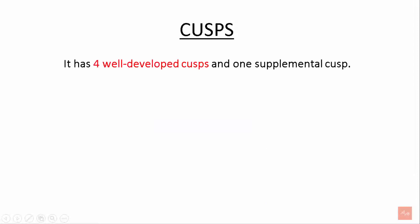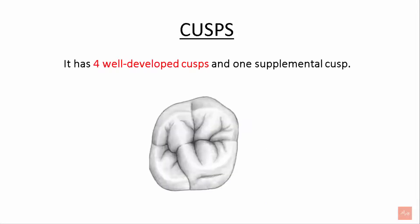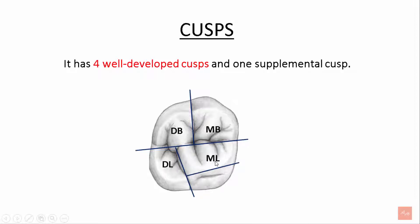Regarding cusps, the maxillary first molar has four well-developed cusps and one supplemental cusp. These are the distobuccal cusp, mesiobuccal cusp, distolingual cusp, mesolingual cusp, and the fifth cusp — the cusp of Carabelli.